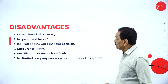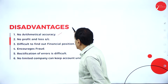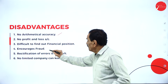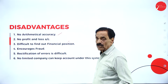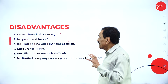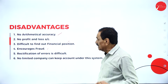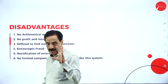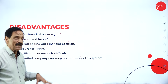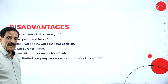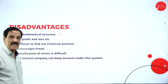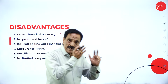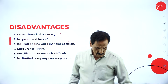The disadvantages are: no mathematical accuracy — accuracy cannot be found out. No profit and loss account can be prepared. It is difficult to find out the financial position. It encourages fraud and rectification is not possible. No limited company can take accounts under this system — only small concerns. Companies under the Companies Act must adopt the double entry system, where for every corresponding debit there must be a corresponding credit.